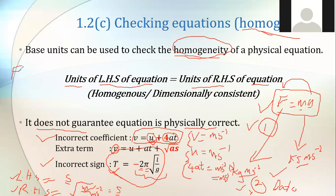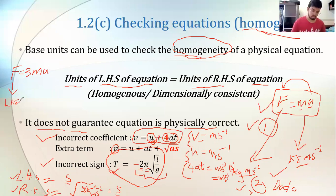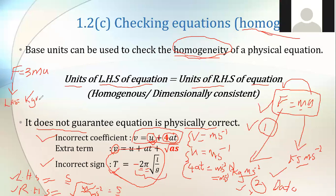Let's say Newton gives F equals 3ma. Is this equation homogeneous? Check the left-hand side — the unit is kg·m·s⁻². The right-hand side unit is also kg·m·s⁻². So this equation is homogeneous, but of course it is physically not correct. But is it homogeneous? Yes, it's homogeneous. This is called checking homogeneity.